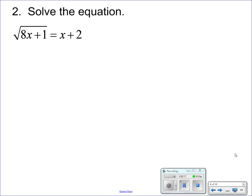The next example: now we have one radical and then we have just variables and numbers on the other side. Again, we square both sides to get rid of the radical.